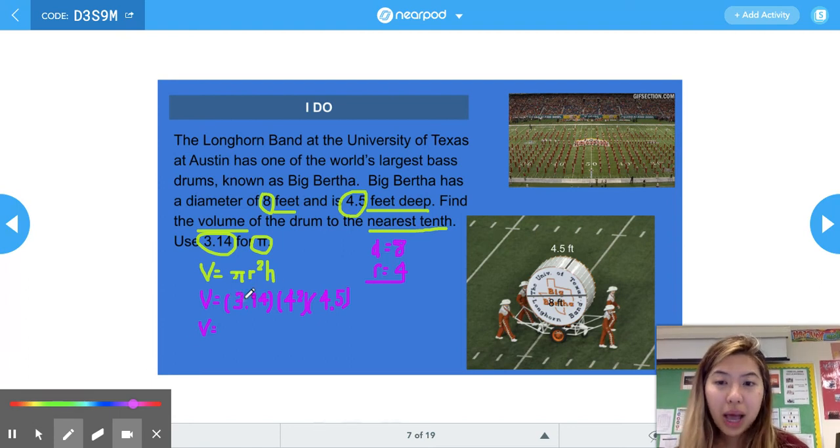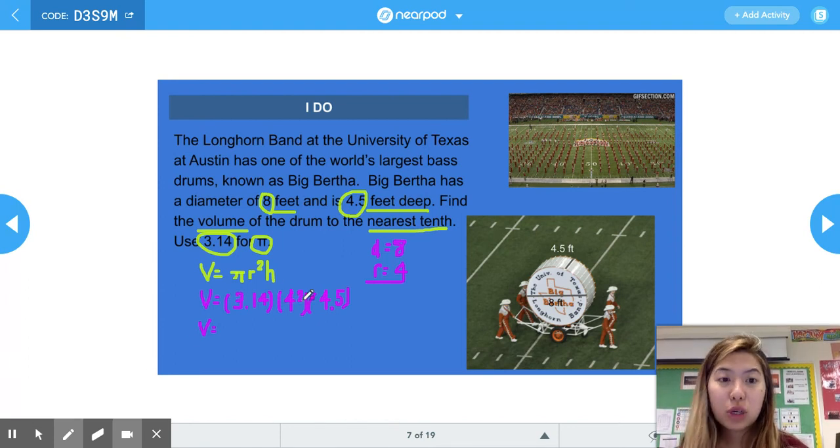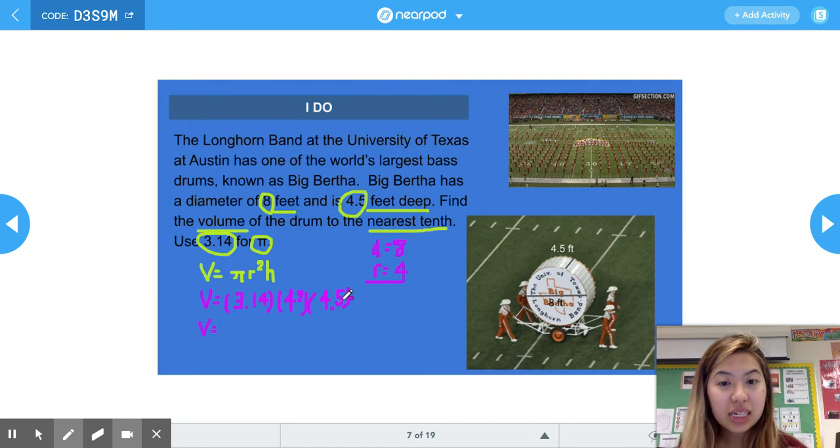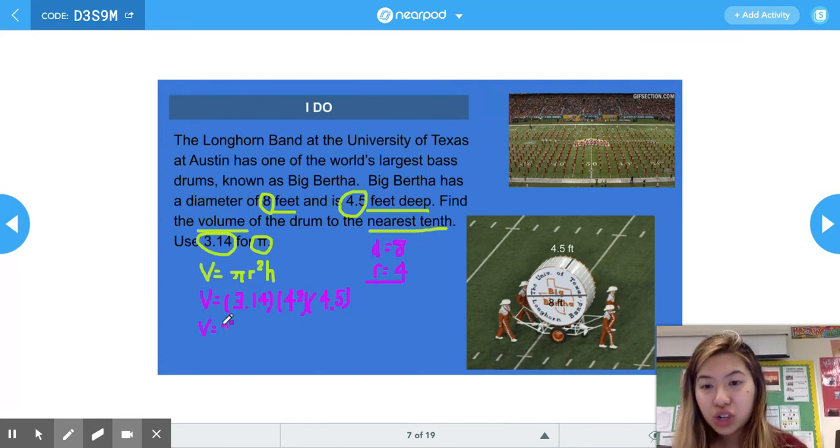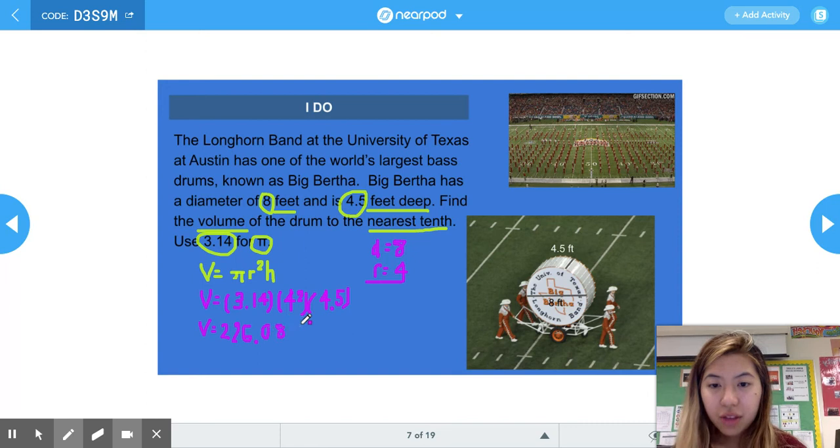When we multiply 3.14 times 4², which ends up being 16 times 4.5, and we round it to 2 decimal places, we get 226.08 feet cubed.